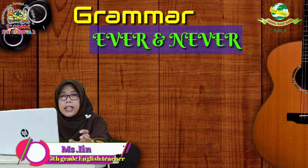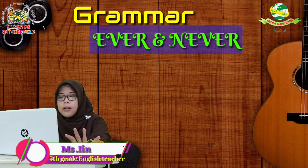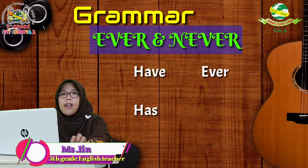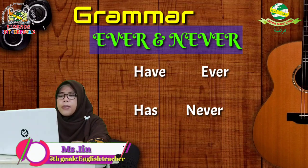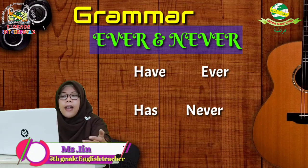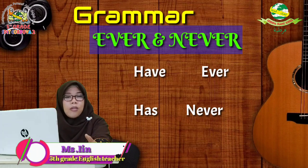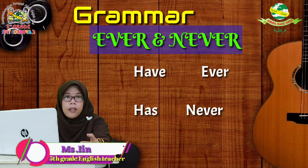Di grammar kali ini kita akan menggunakan four words: have, has, ever, and never. Both of these words are used to talk about the activities that you or others have or haven't done before. Kalau sudah dilakukan berarti ever, kalau belum berarti never. To make it clear, let's go to the examples.